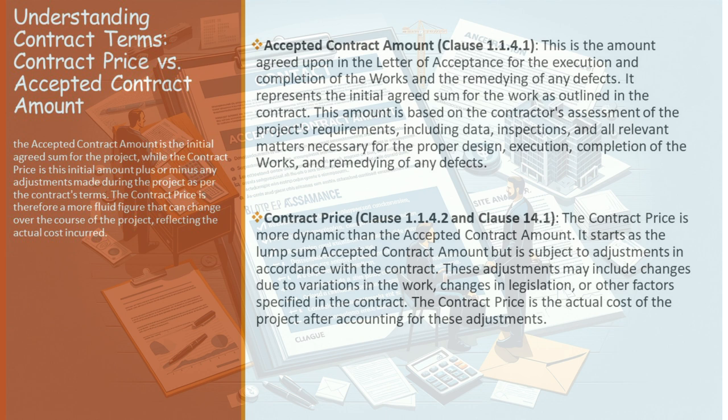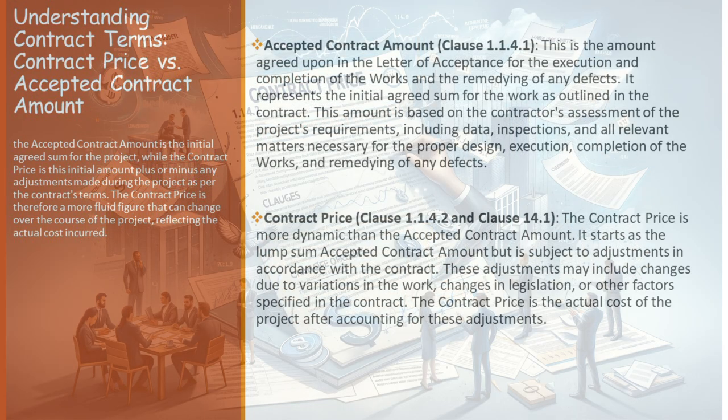But how does this adjustment happen? Let's dive into some of the clauses that influence these changes. Clause 14.1, for instance, sets the stage for these adjustments. It states that the contract price shall be the lump sum accepted contract amount, subject to adjustments in accordance with the contract. This means that the initial figure is not set in stone — it's a starting point, a base from which the actual cost is calculated.